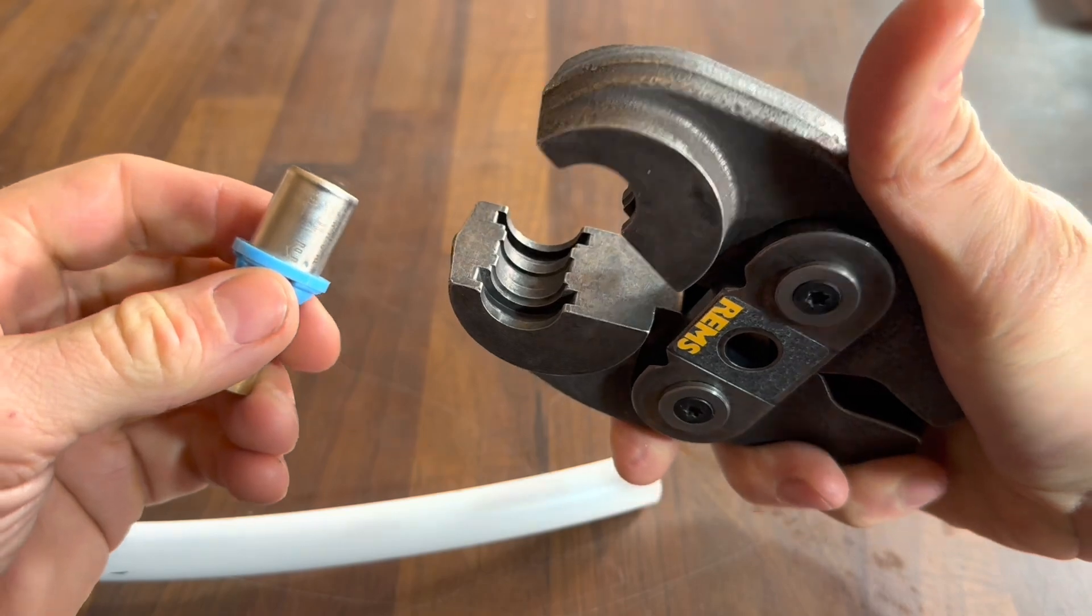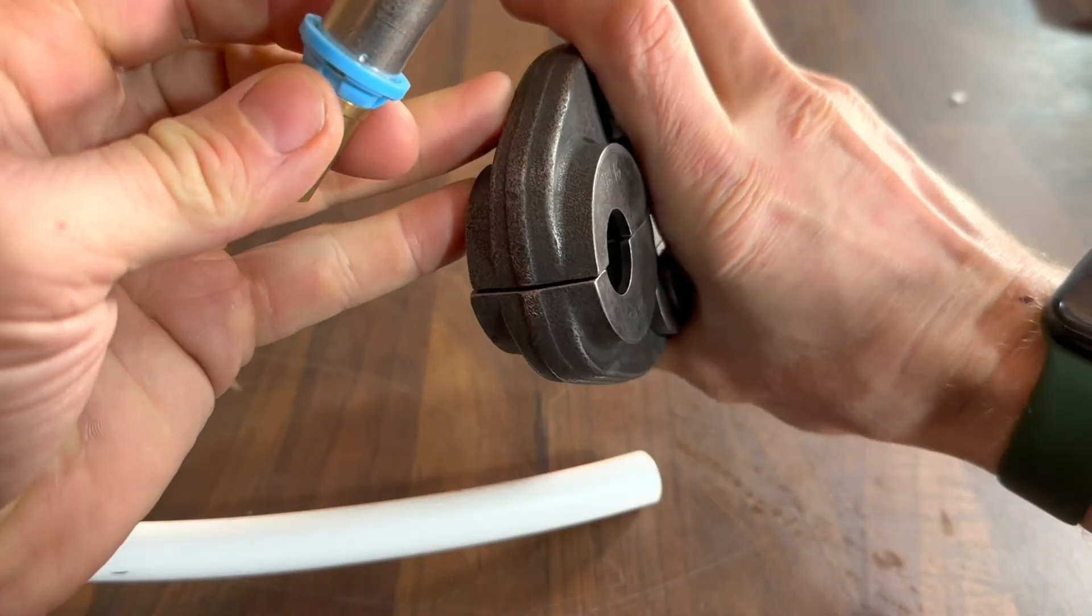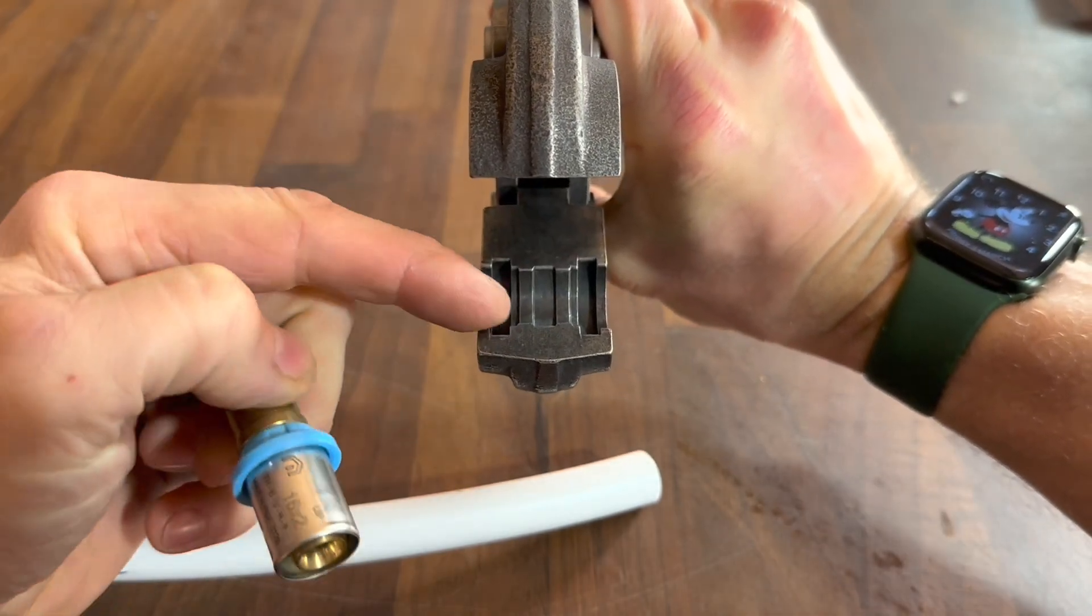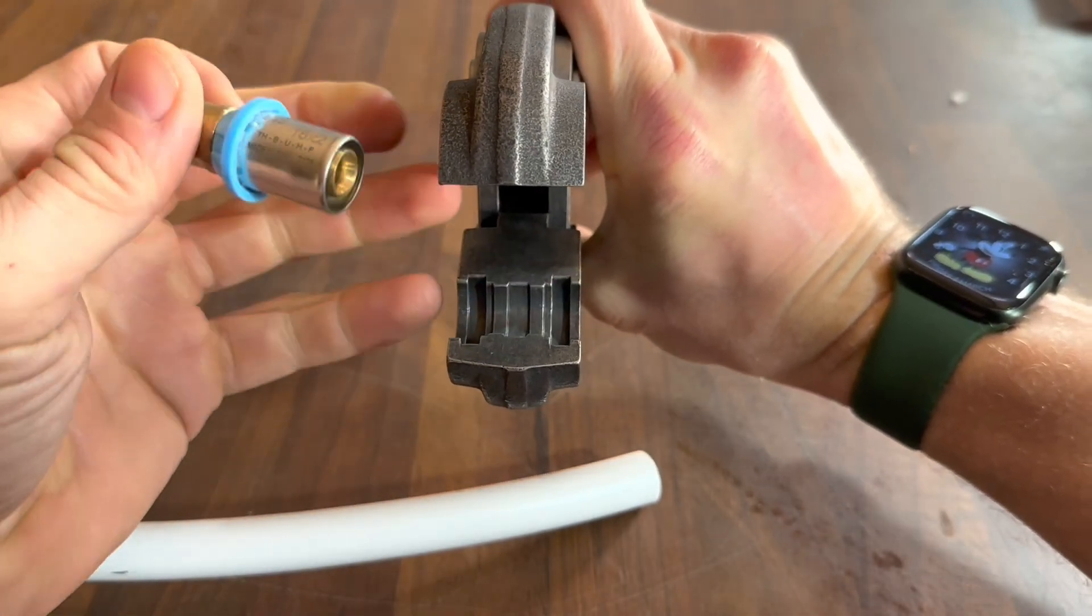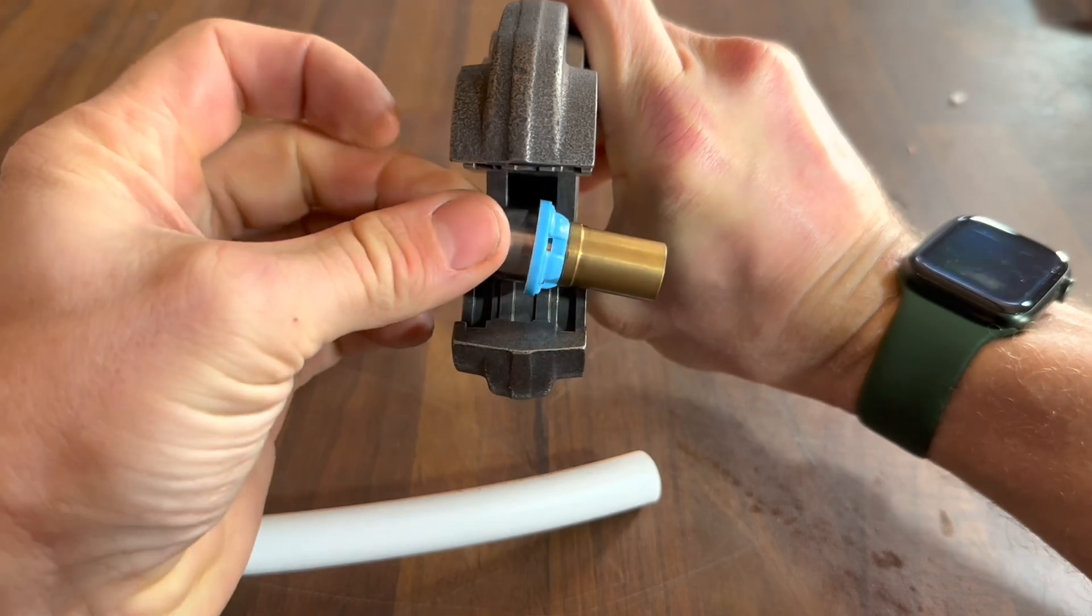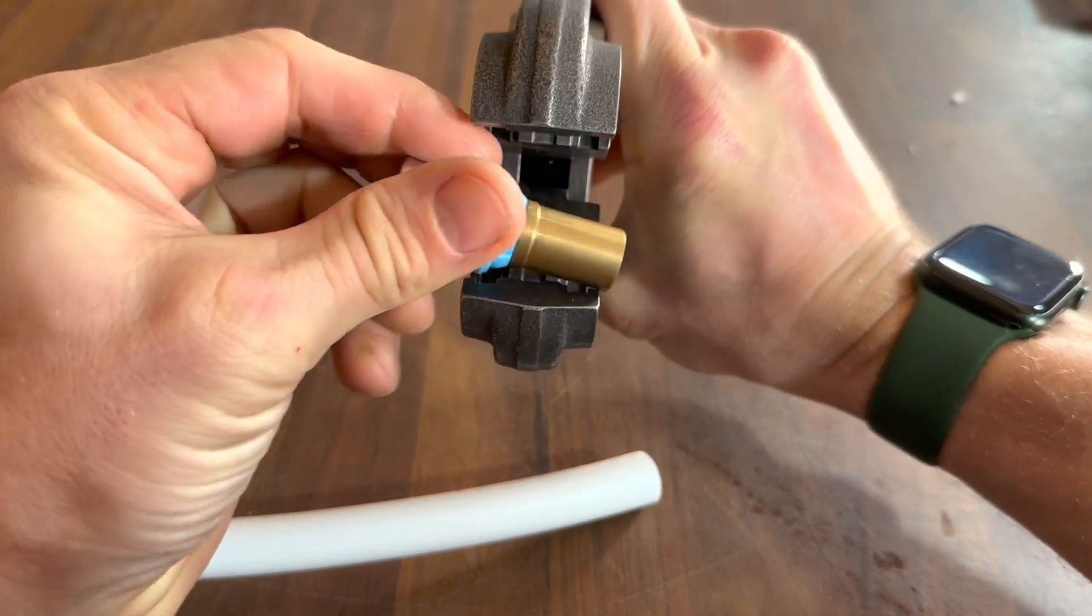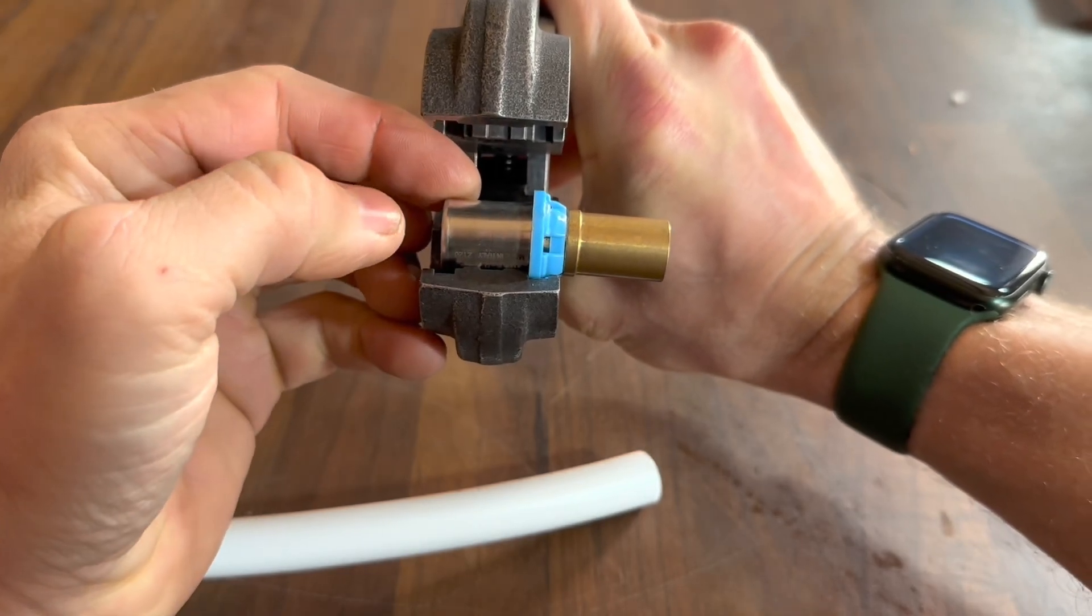If we see the profile of the jaw there, let me do it this way, this blue collar locates you over there or if you're pressing from the other side there and it actually presses here and here which is either side of those o-rings.